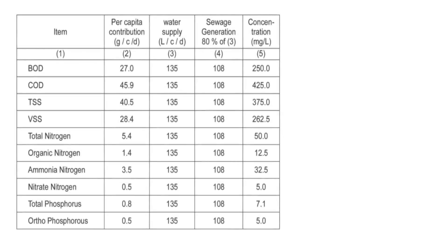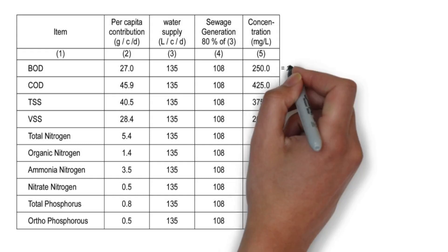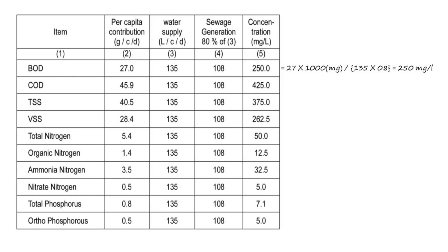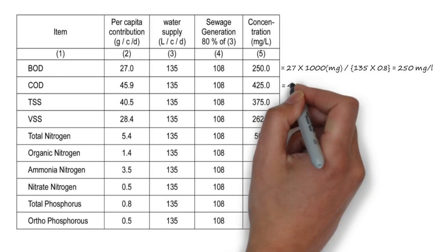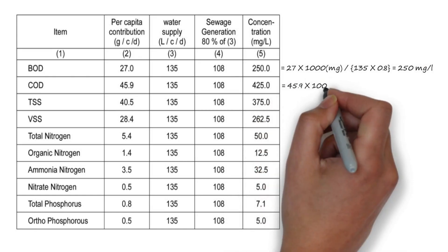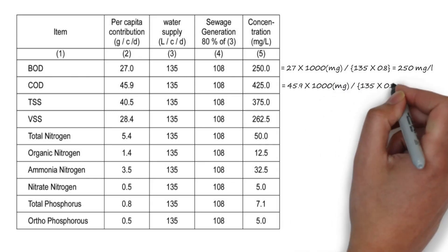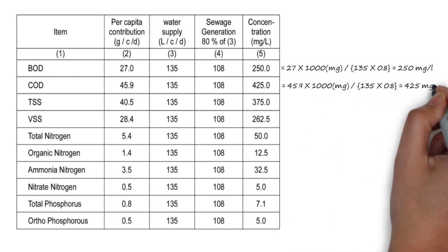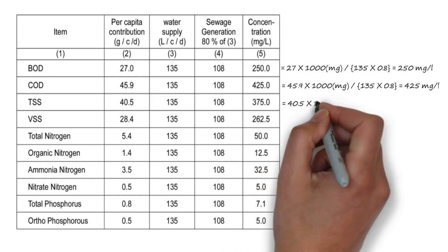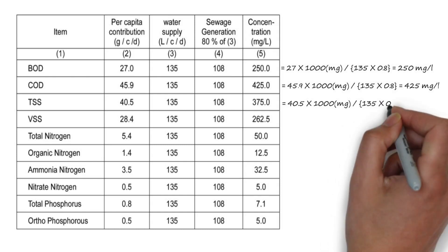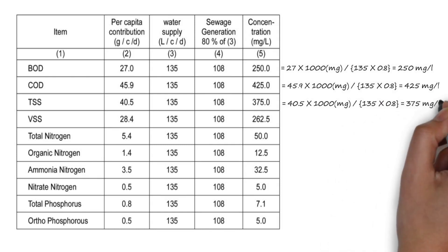For COD, 45.9 multiplied by 1000 divided by 135 multiplied by 0.8, that is 425 mg per litre. For total suspended solid, 40.5 multiplied by 1000 divided by 135 multiplied by 0.8, that is 375.